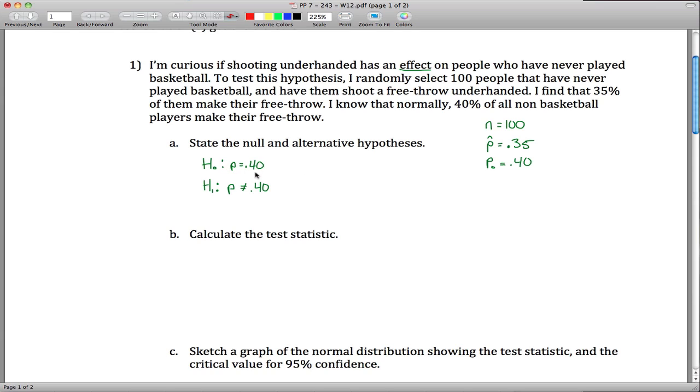In other words, that the proportion of the population, if they all shot underhanded, that the proportion of the population would shoot exactly 40% or would not shoot 40%. So I know that in my sample, 35% made their free throw, but the question is, the population that this sample is representative of, does that equal 40% or not? And it might be worth writing here that that is 2-tailed.